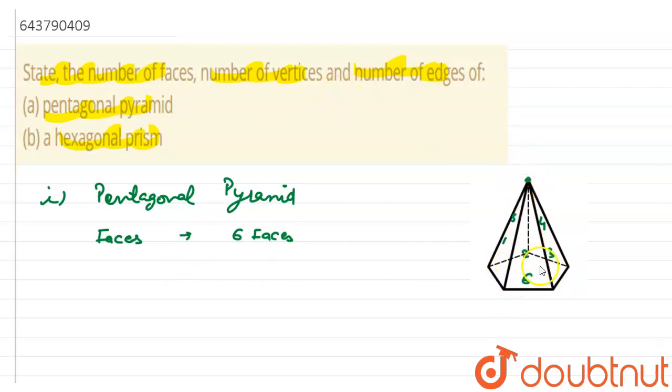Now let's count the vertices. One in top and five at the bottom which are the vertices of pentagon, so total six vertices are there, right?